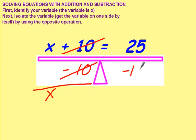But what you do to one side, you must do to the other side. You get 15 on this side. x equals 15. Rewrite: x equals 15. This will be your solution to the equation.